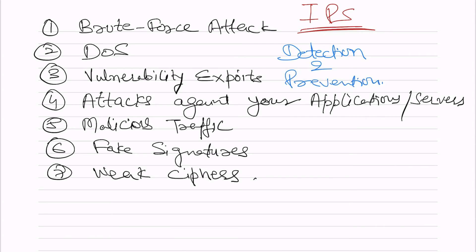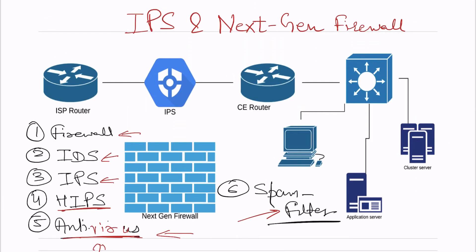HIPS is a kind of software that we install on laptops or office workstations. You may have seen HIPS installed on endpoints — it does the same thing as IPS. IPS is an appliance that reads all traffic entering the LAN, detects it, and blocks it. HIPS is installed on workstations or servers. In top organizations HIPS is very commonly used.